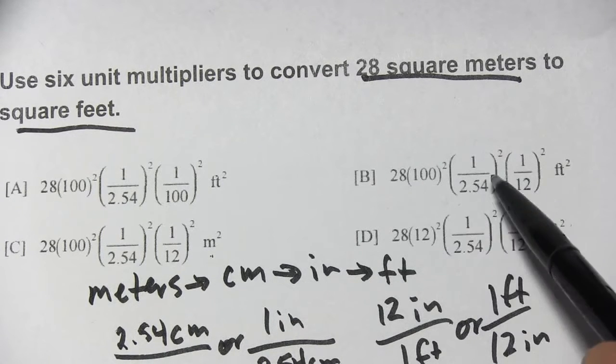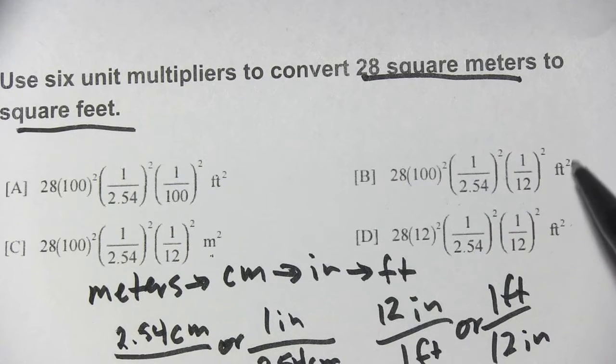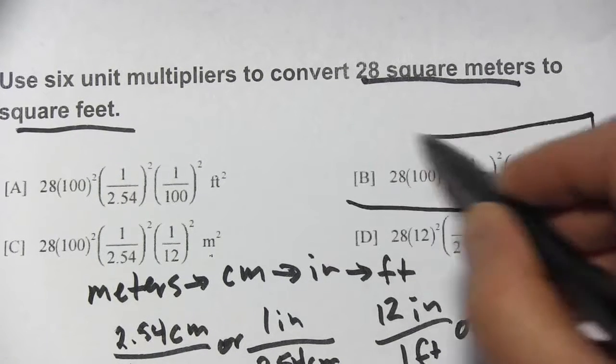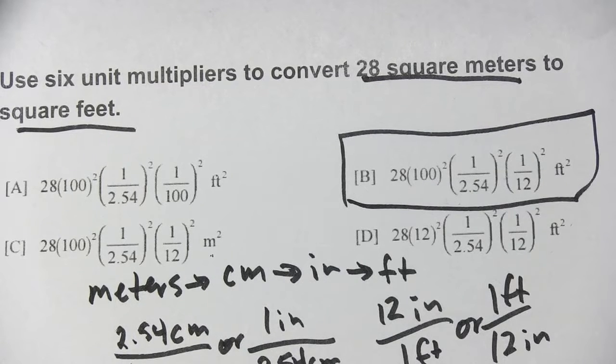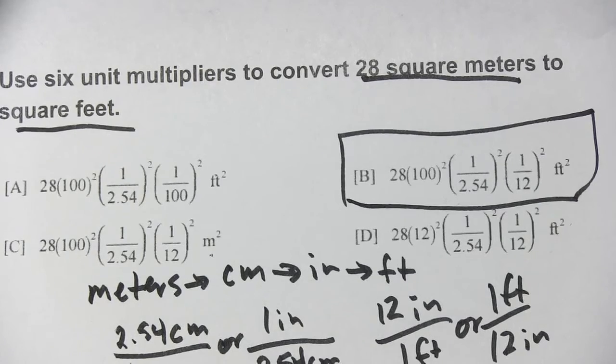28 times 100 squared, 1 over 2.54, 1 over 12. And ends up in square feet. So correct answer there is B. And that's a little bit of work with converting units of area.